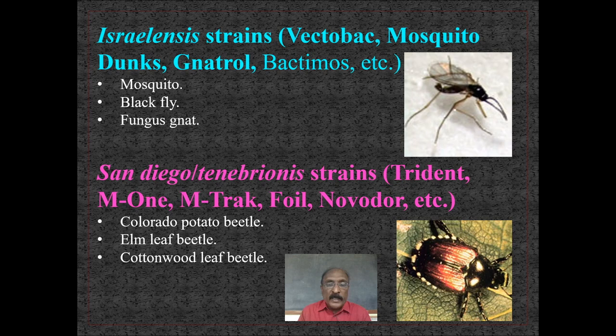Products using the tenebrionis strain can control Colorado potato beetle, elm leaf beetle, and cottonwood leaf beetle.